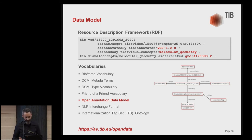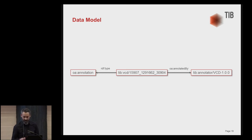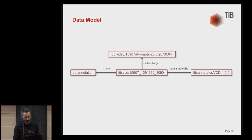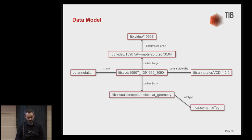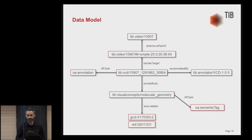On top of the open annotation data model, we use several common vocabularies like BIBFRAME, Dublin Core, FOAF, and others. This makes for a nice graph: we have an annotation linked to a part of the video identified by time codes, and that part is part of the video. The annotation has a body — the visual concept we detected — as a semantic tag. To link it to other knowledge bases, we relate it to the GND, Wikidata, or DBpedia. We have mappings to each of these knowledge bases in the back end.